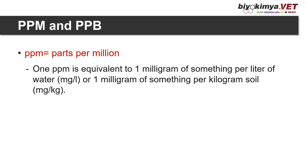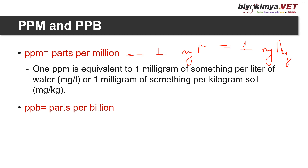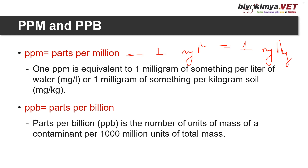PPM and PPB: PPM stands for parts per million — one PPM equals one milligram per liter or one milligram per kilogram. PPB stands for parts per billion — the number of units of mass of contaminant per 1,000 million units of total mass — equals one microgram per liter or one microgram per kilogram.